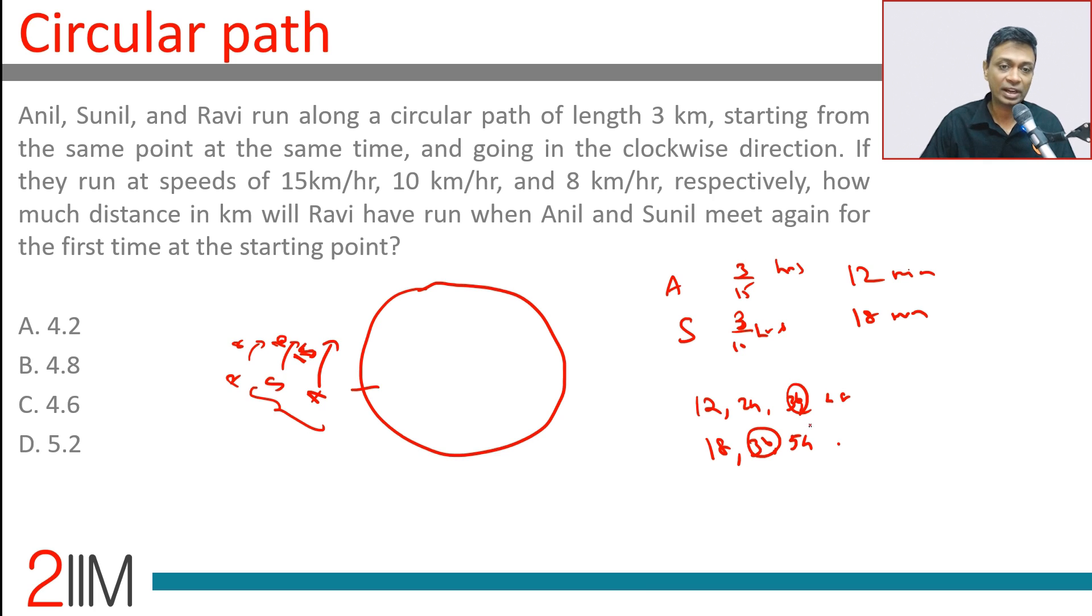So how much does Ravi run in 36 minutes? Ravi runs at a speed of 8 kilometers per hour, 8 kilometers per hour into 36 by 60 hours. 36 by 60 is 3 by 5, 8 by 5 is 1.6, 8 to 3 is 4.8 kilometers.